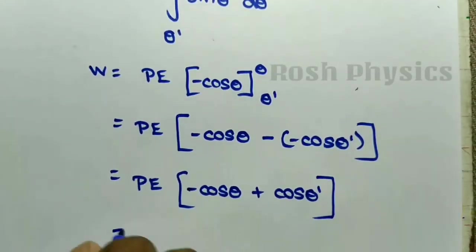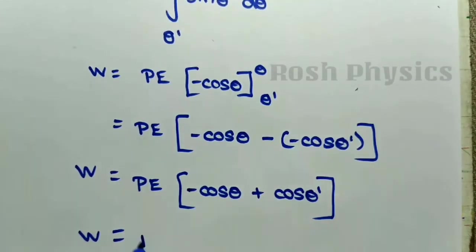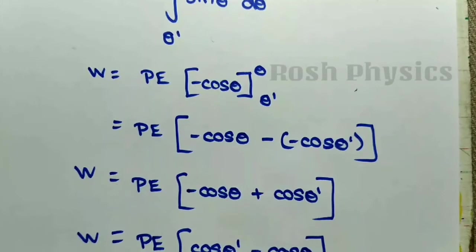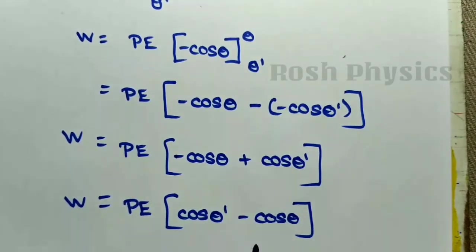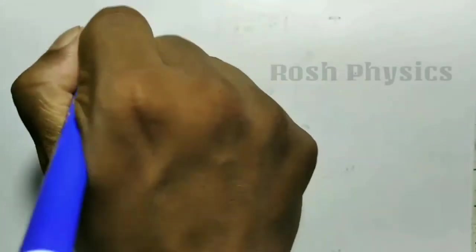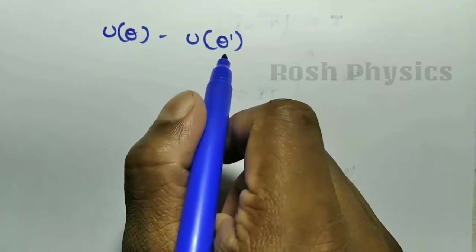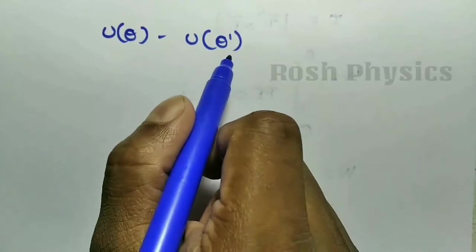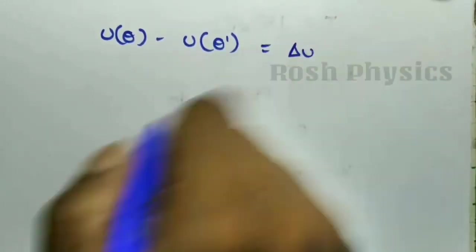Rearranging with the positive term first: W = pE(cosθ' − cosθ). The work done depends on the change in angle between θ' and θ. This work done equals the change in potential energy, written as ΔU = U(θ) − U(θ'). So W = U(θ) − U(θ'), which is ΔU.